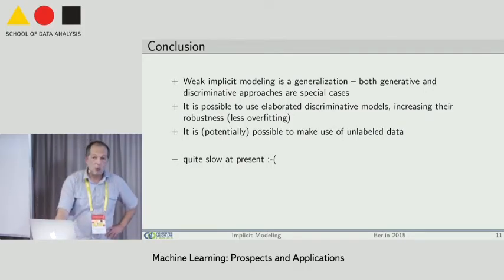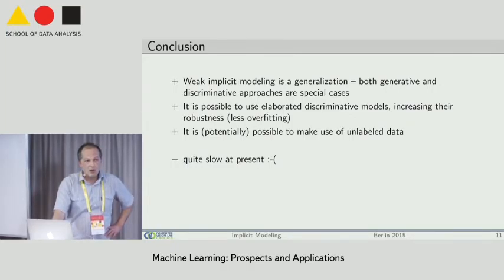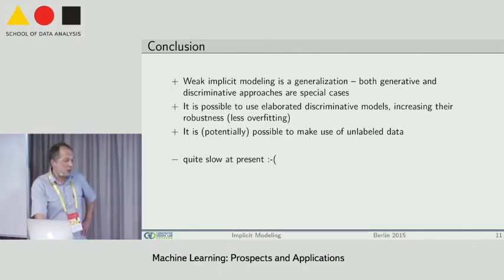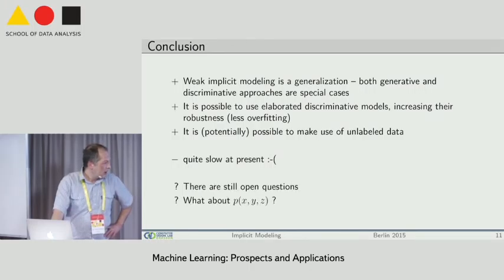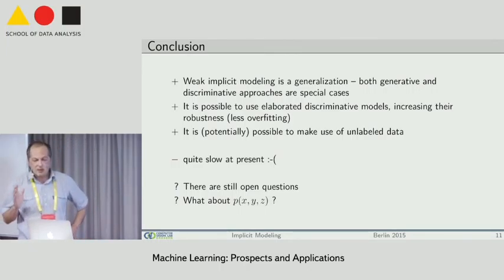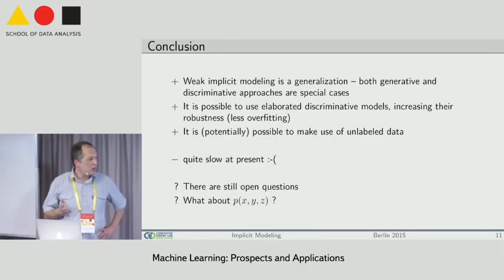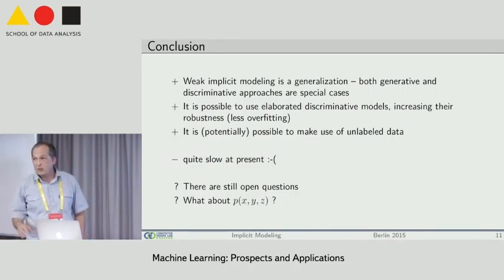On the negative side: at the moment it is quite slow. It is based on sampling, so it takes on the order of days of computation time for around 100 images. Sampling labelings from the given posteriors is a very time-consuming process, so it is not practically applicable at the moment. There are still some open theoretical questions — the algorithm presented rests on a reasonable assumption, but it is not exactly the algorithm you would ideally want for optimizing joint maximum likelihood. I would be glad to discuss these open questions with you.